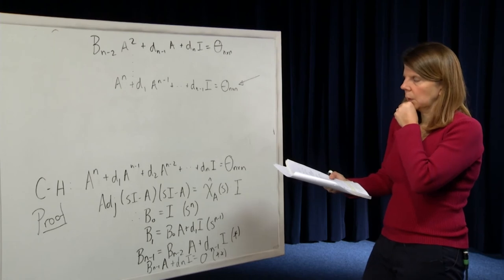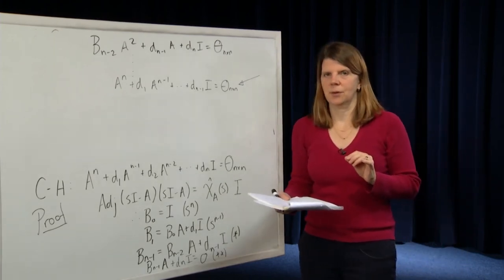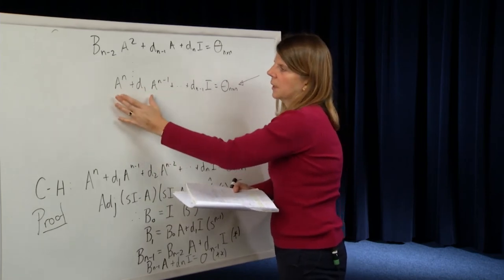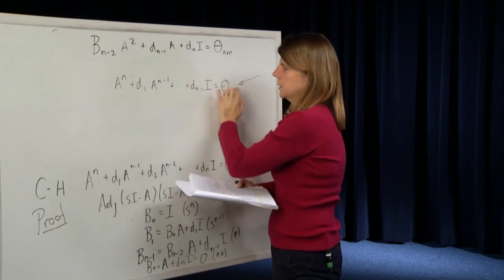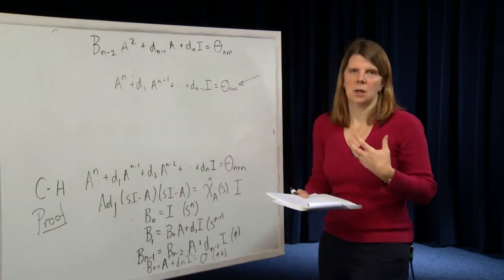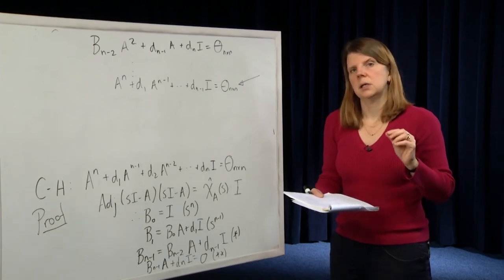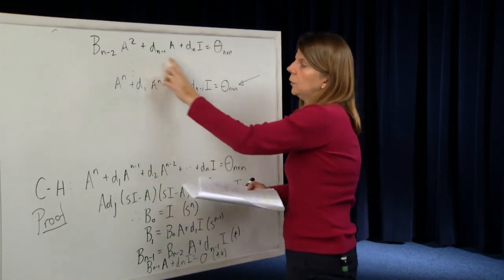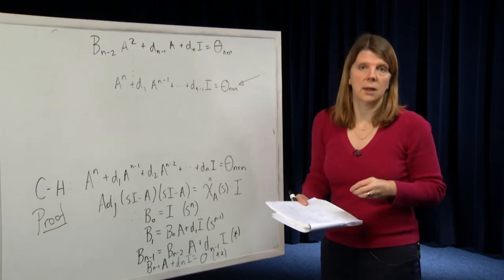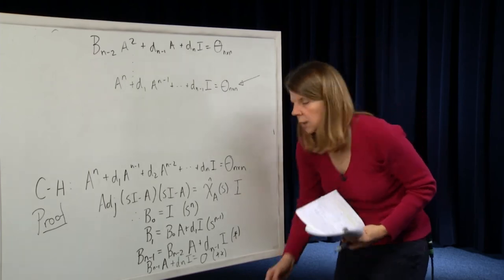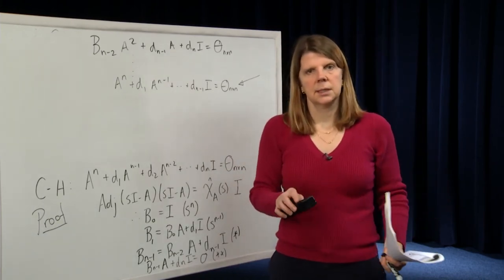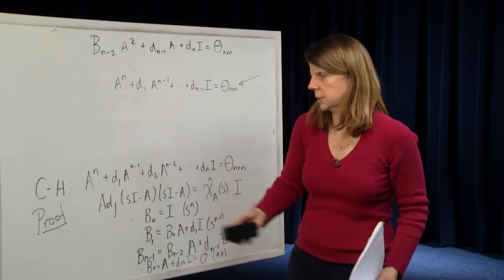Why is this useful? Cayley-Hamilton is a very important theorem. It tells us that every matrix satisfies its characteristic polynomial. Given that this expression always equals zero, it tells us that if we have a polynomial function of a matrix A where that polynomial is of degree greater than N, we can use this identity to simplify it — we can always bring that polynomial back to something of degree less than or equal to N.